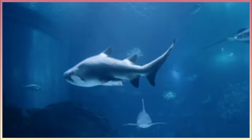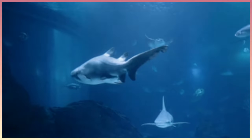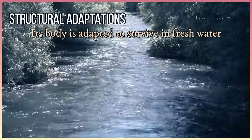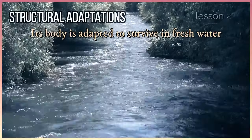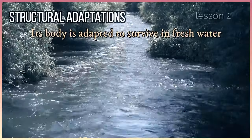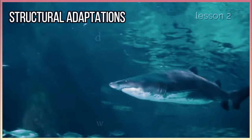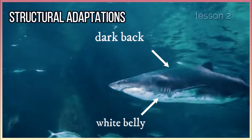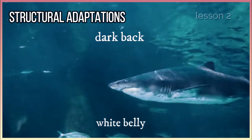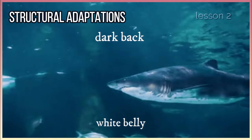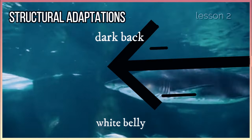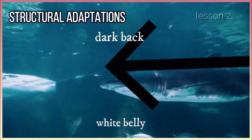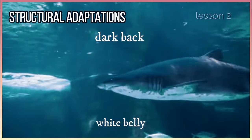There are three examples of structural adaptations of the bull shark. Its body is adapted to survive in fresh water, giving it a unique advantage over other sharks. It has a dark back and white belly. When an animal swimming above the bull shark looks down into the ocean, it may not see the shark in the shadows due to its dark back.